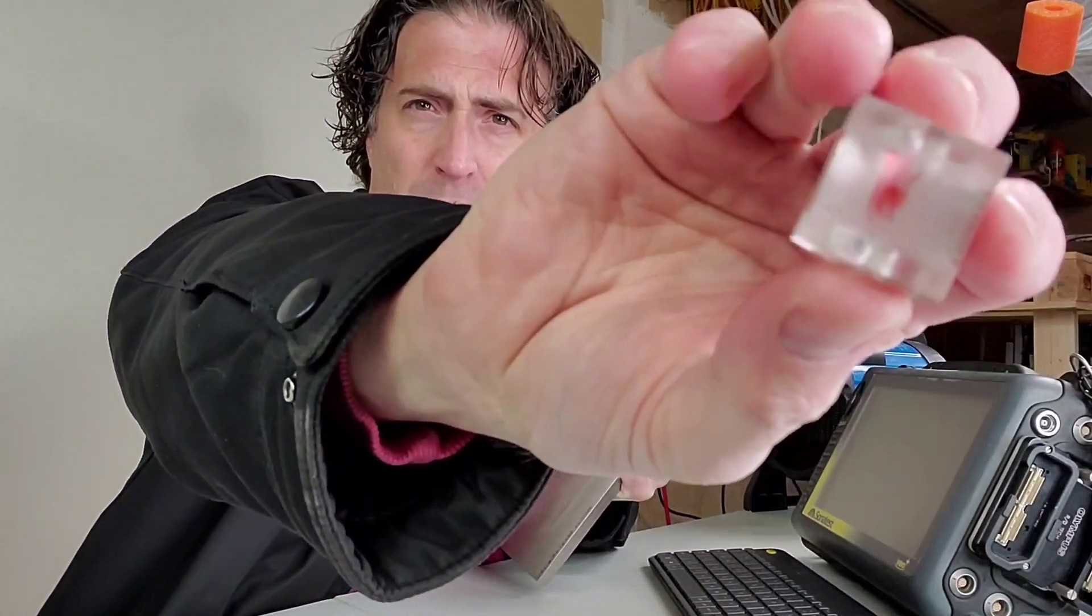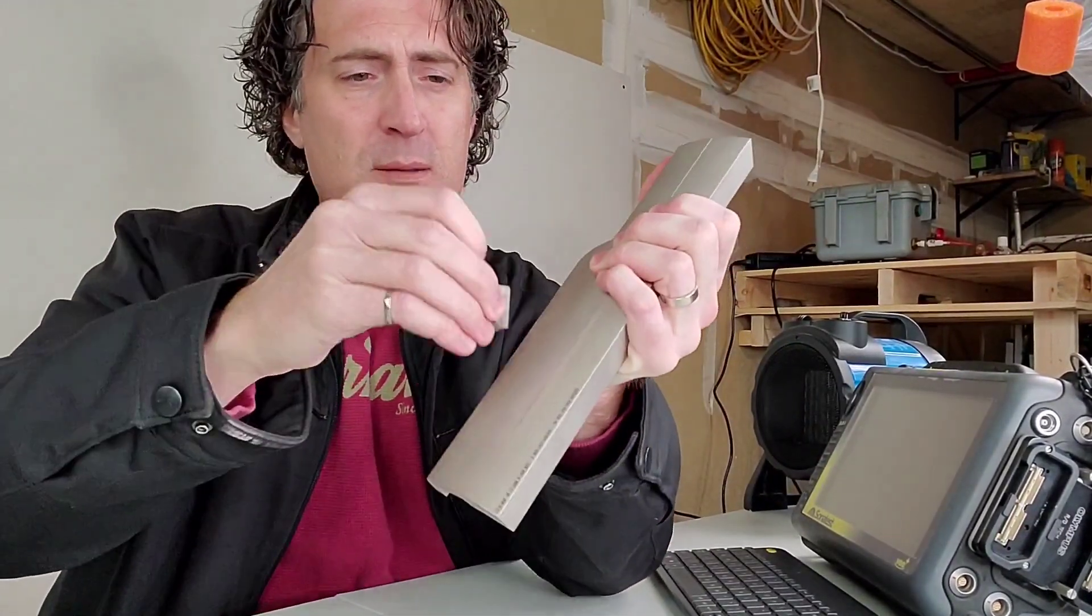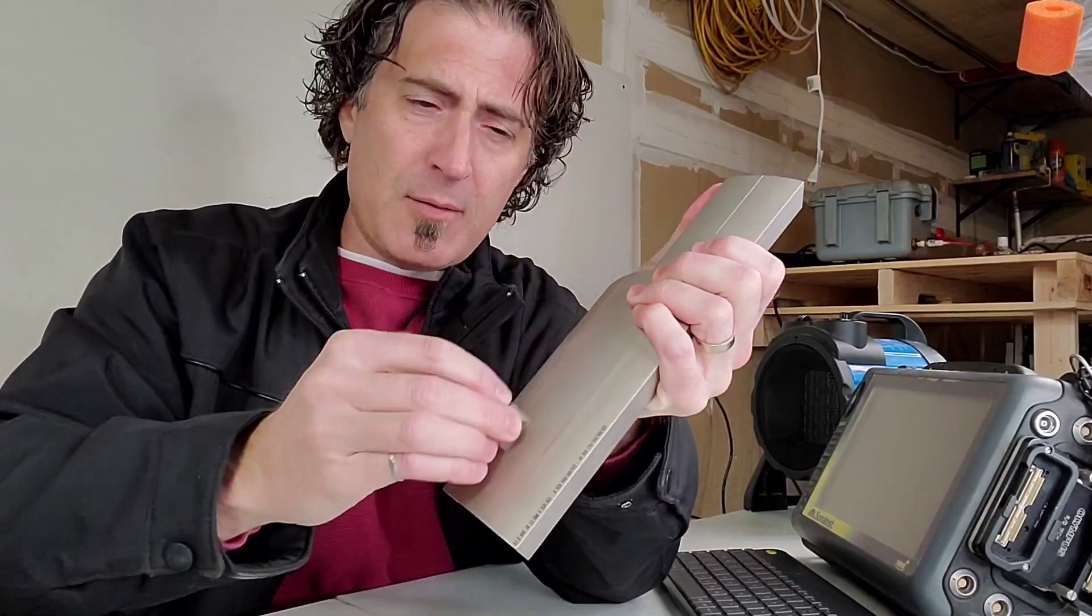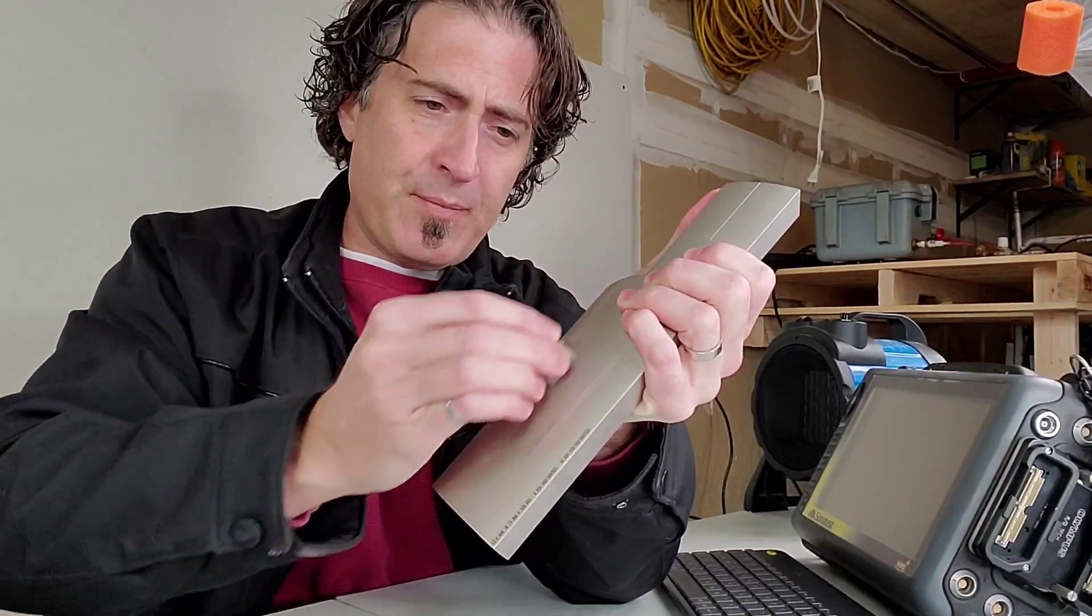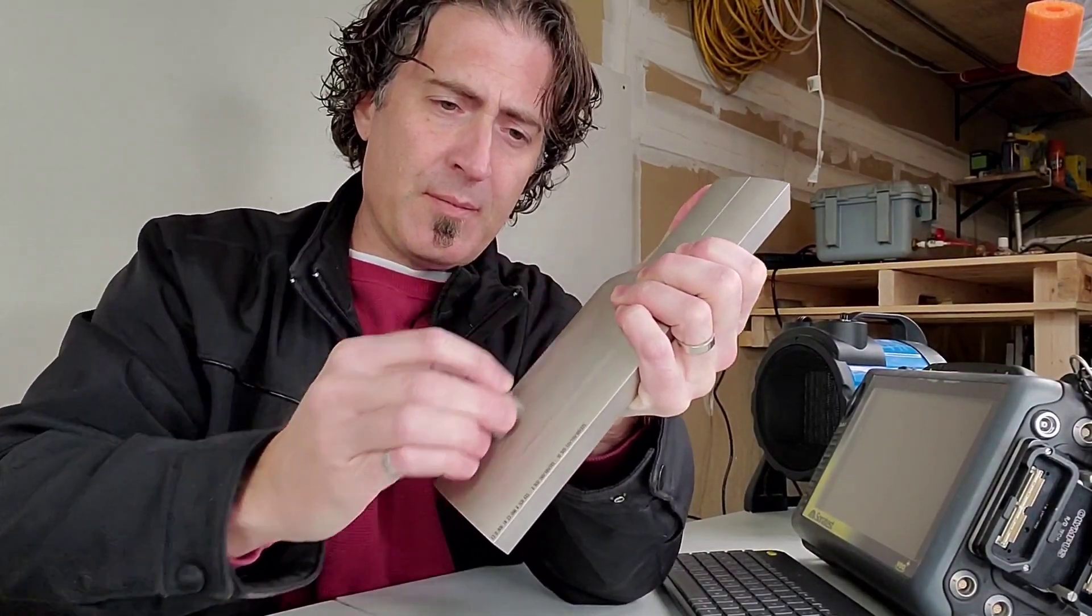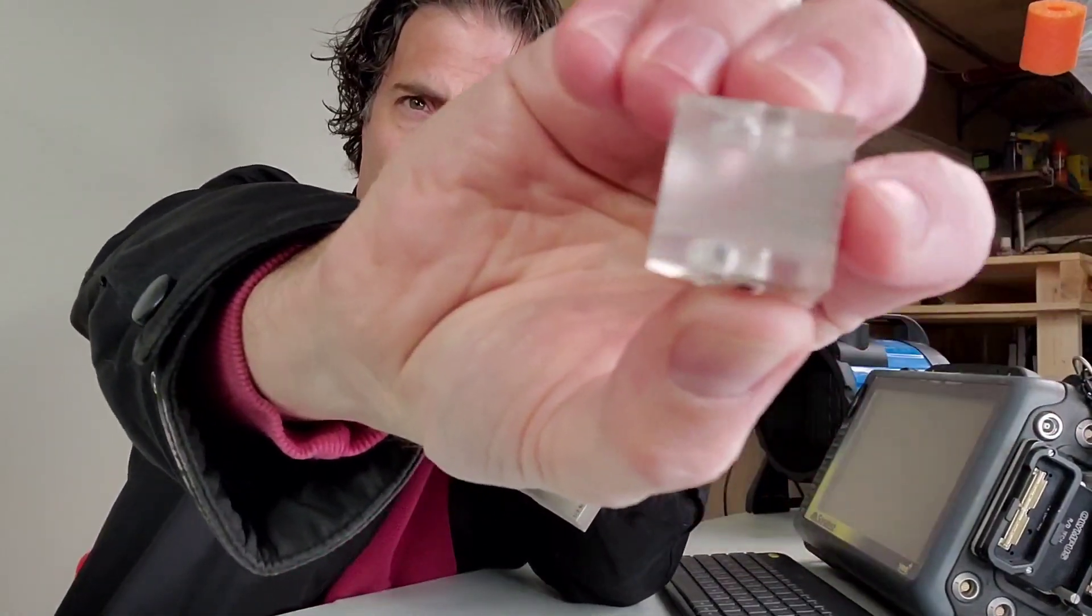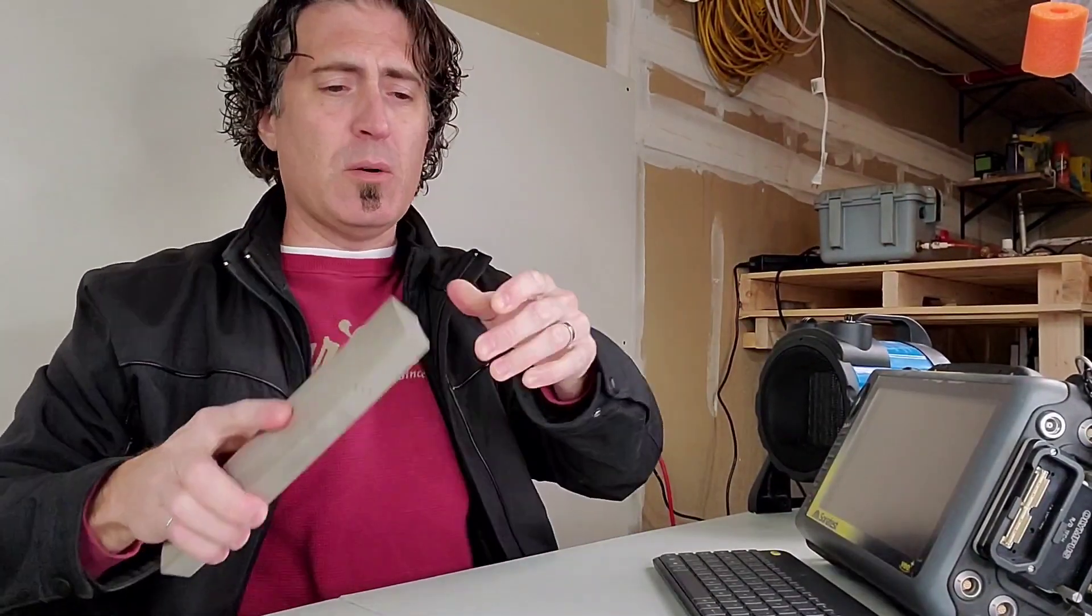Now we're going to take our other wedge. This is the 8.625. Do the same thing on this block, just lightly back and forth. And guess what? The line is gone. So the 8.625 wedge works on this block. That's it. Quick and easy.